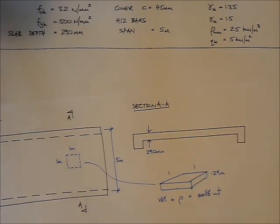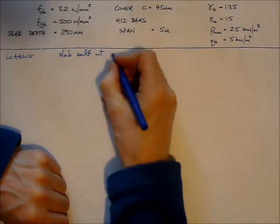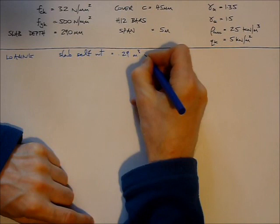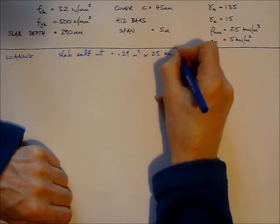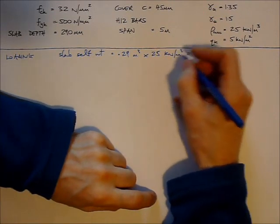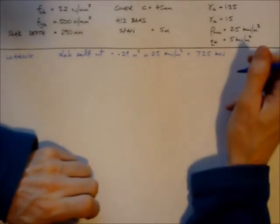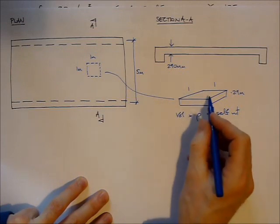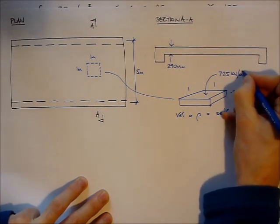Let's start working on the loading. Slab self-weight: the volume we said was 0.29 by 1 by 1, so that's 0.29 m³ times the density of reinforced concrete, which is 25 kN/m³. When I multiply those two things together I get 7.25 kN/m², so every square meter on plan of slab weighs 7.25 kN/m².